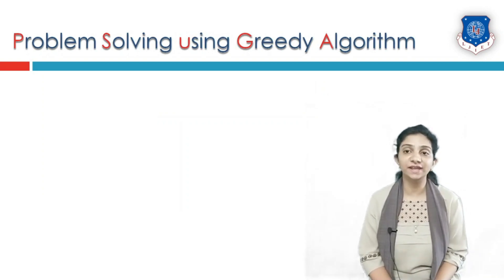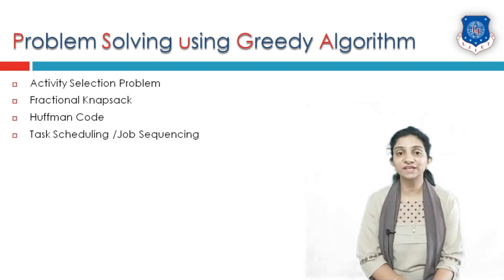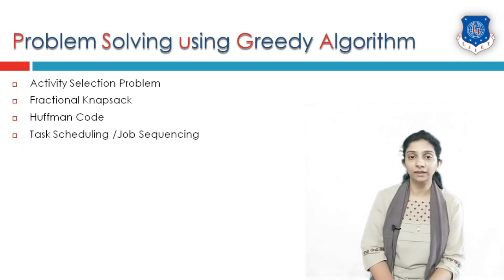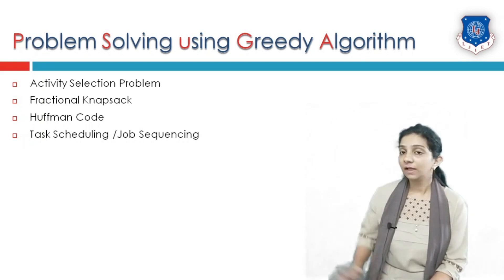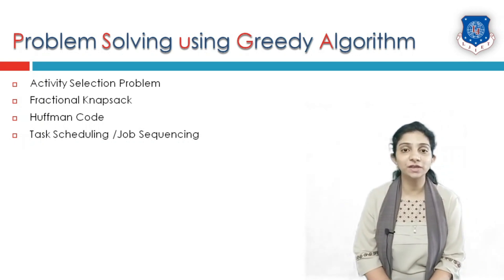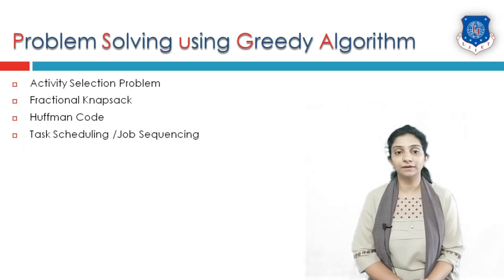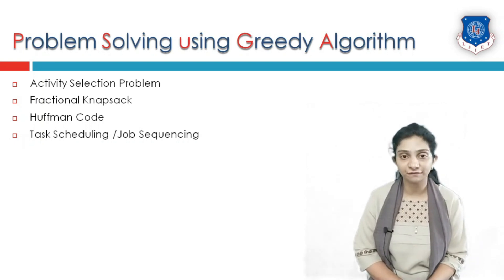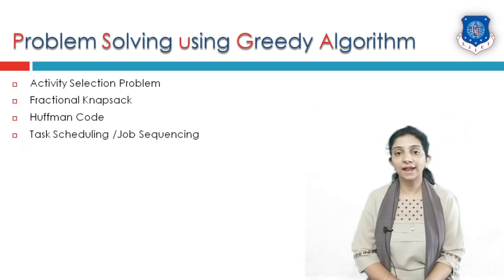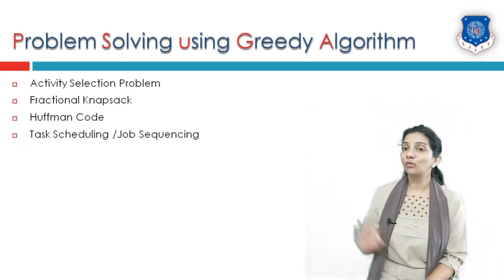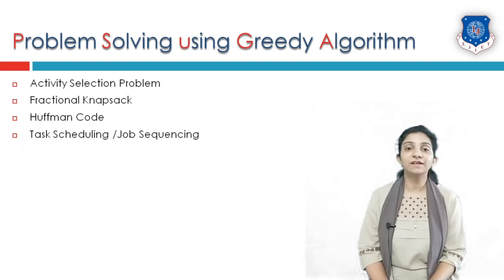Problems that can be solved using greedy algorithm include: activity selection problems, fractional knapsack problem, Huffman coding, and job sequencing. Prim's and Kruskal's algorithms are not listed here because they belong to graph algorithms and will be covered under graph topics. Activity selection, fractional knapsack, Huffman coding, and task scheduling or job sequencing will be covered inside greedy algorithm. Thank you everyone for watching this video.